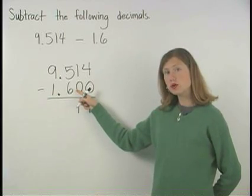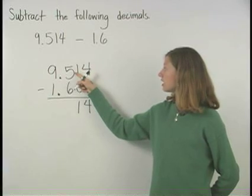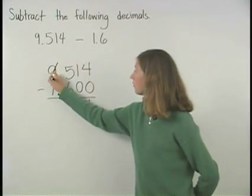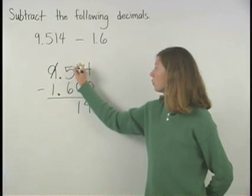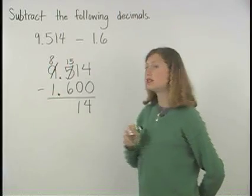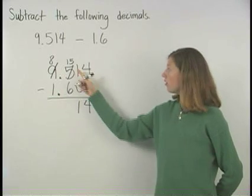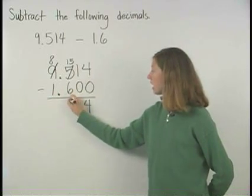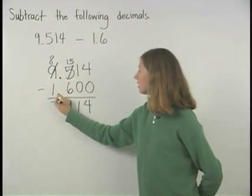But notice that we can't take away 6 tenths from 5 tenths. So we borrow 1 from the units column which gives us 15 tenths and leaves us with 8 units. Now, 15 minus 6 is 9 and 8 minus 1 is 7.